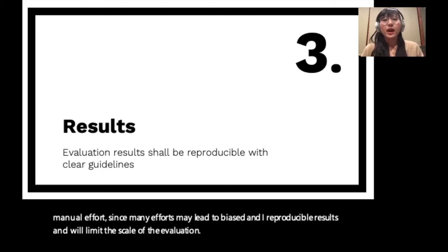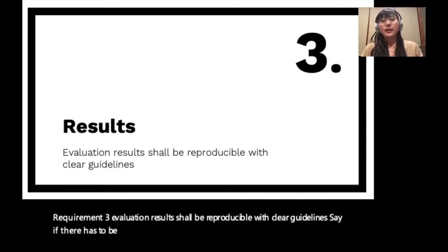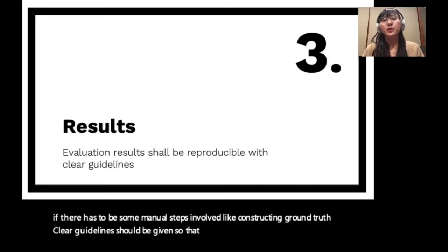Requirement number three: evaluation results shall be reproducible with clear guidelines. If there have to be some manual steps involved, like constructing ground truth, clear guidelines should be given so that other researchers can reproduce your results and build upon your work.